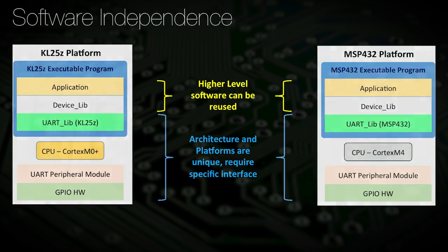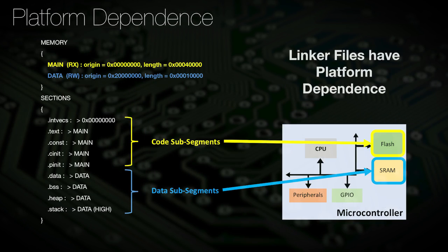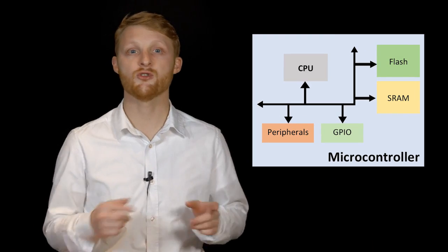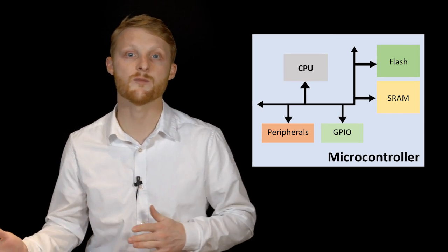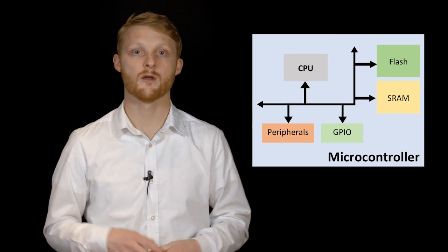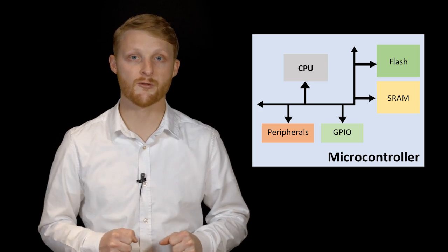We discussed some basic high-level software that has platform dependencies like the linker file with the program code and program data. The way that a compiler allocates program code and data memory is highly architecture-dependent, as there are certain specifications that map the C programming constructs to the physical memory beyond just a linker file. How does your code and your data get oriented in memory? How does your code and data get moved between the CPU and the memory interface? These are barely introduced, but they have some serious implications on your program efficiency.